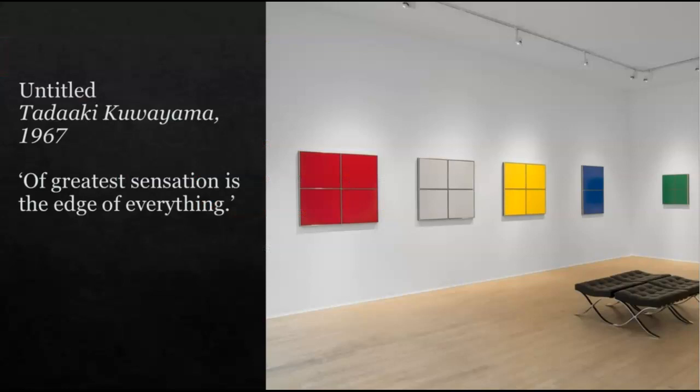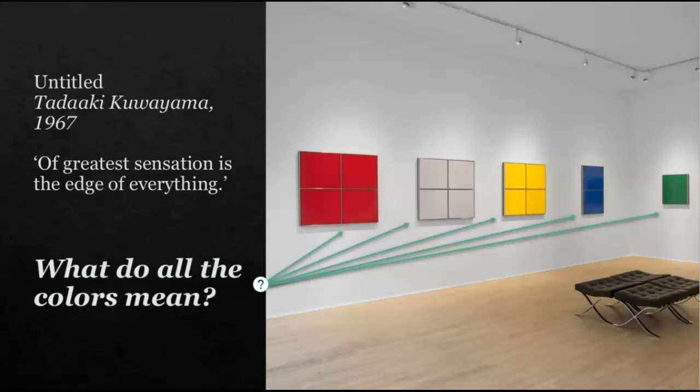Here's another example from 1967. I've actually seen the yellow one at the Blanton Museum. The artist said the greatest sensation is the edge of everything — what he was trying to say is where your colors meet. Looking at the far right, you see green to blue to yellow — complementary colors. Gray and red are not complementary colors. It's a case where some people can figure out the interpretation and some of us, like me, cannot.